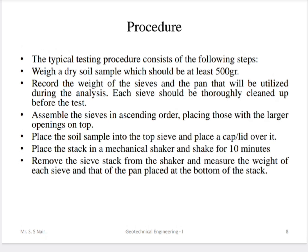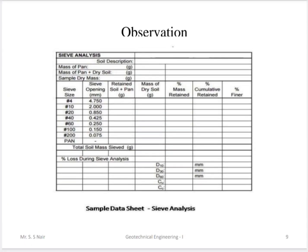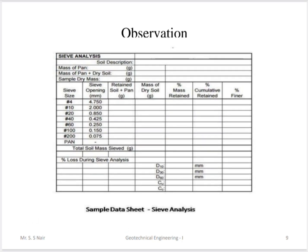Place the whole set of sieves on a mechanical shaker for 10 minutes. Remove from the shaker and measure the retained particle mass on each sieve and the pan at the bottom. Record results in the observation table noting retained mass, percentage retained, cumulative retained, and percentage finer. From this table, we obtain the particle size distribution.